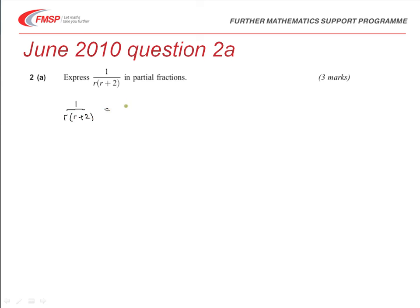Now those are both linear terms, so we know that we'll just have a constant on top. So one of them will be A over r and the other one will become B over r plus 2.